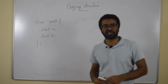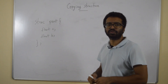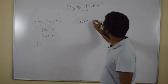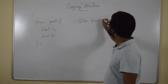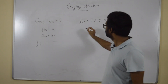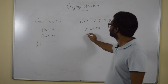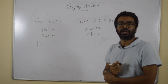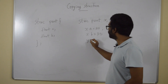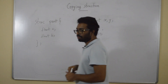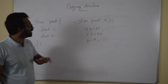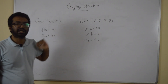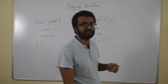We have this point structure and let's create two variables of this type. I'm going to assign values — x dot a is assigned to 20, x dot b to 30.